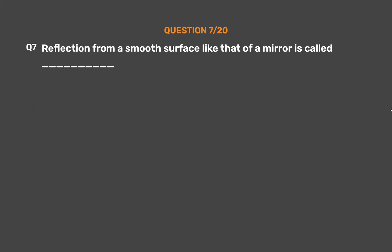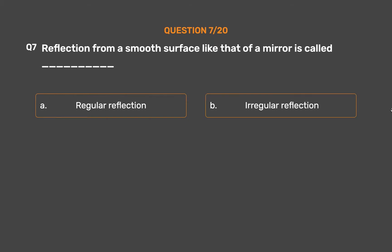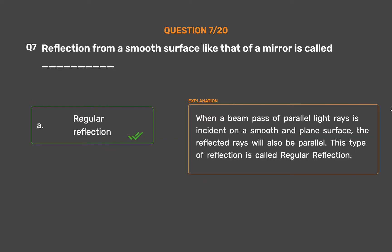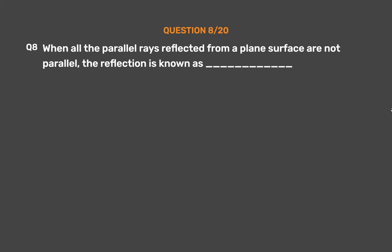Question number 7: Reflection from a smooth surface, like that of a mirror, is called — Option A: Regular reflection. Option B: Irregular reflection. Option C: Lateral reflection. Option D: None of these. The correct answer is Option A, Regular reflection. When a beam of parallel light rays is incident on a smooth and plain surface, the reflected rays will also be parallel. This type of reflection is called regular reflection.